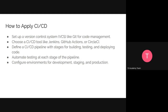To apply CI/CD, first set up your version control system like Git, then choose a CI/CD tool — you can use Jenkins, GitHub Actions, or CircleCI. For GitHub, GitHub Actions is most ideal and easier to use because of its simple interface. Define your pipeline in GitHub Actions and automate each step. Configure environments for development, staging, and production. Once set up, every time you push to your repository, GitHub Actions will automatically run your code through the pipeline and show you the results.